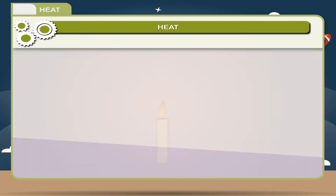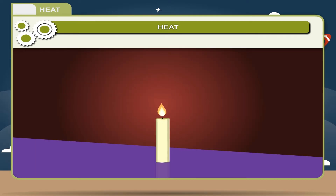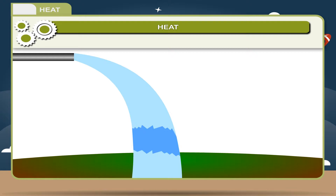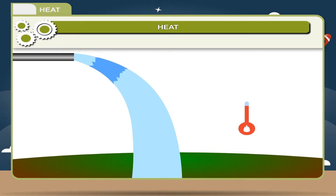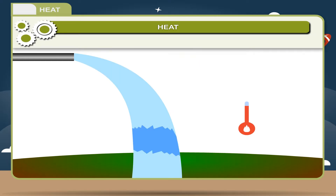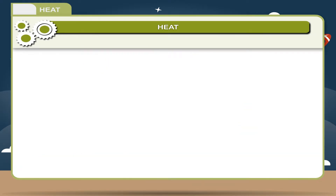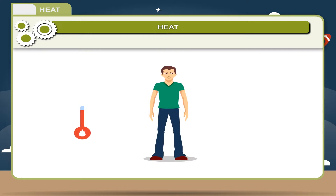Activity: If a candle burns, the chemical energy is converted into heat energy. When water falls from a great height to the earth, its temperature increases. Hence, the mechanical energy is converted into heat energy. When a body is heated, its energy increases and when it is cooled, its energy decreases.